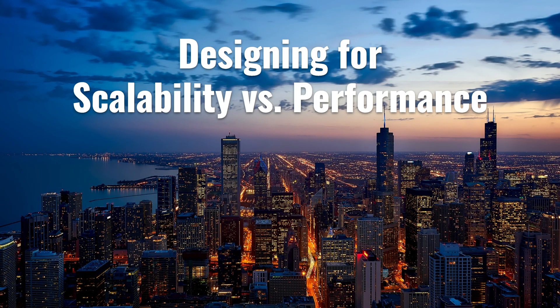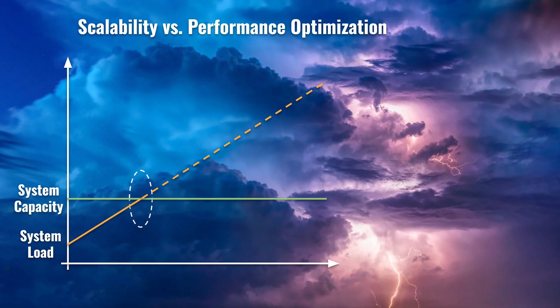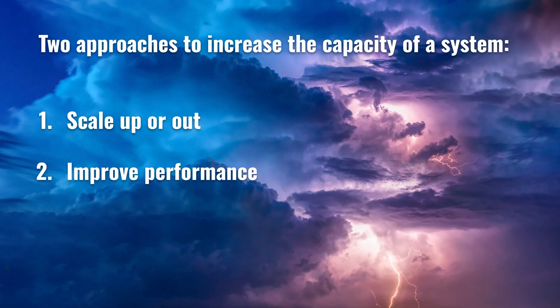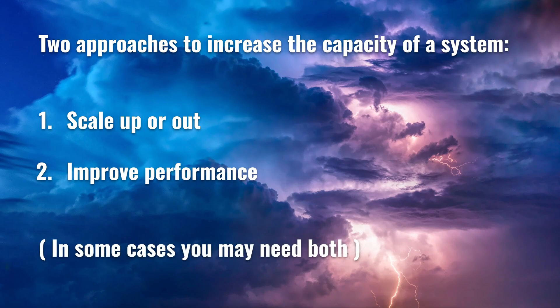In this video, I want to discuss the high-level differences between designing a system for scalability versus designing a system for performance. If the load on your system grows close to the capacity of your system, you will typically have to address that situation by increasing the capacity of the system to make sure the system can continue to handle the load that it receives. You typically have two ways to increase system capacity: you scale the system up or out, meaning you add hardware to increase the system's capacity, or you optimize the performance of the system to increase its capacity on the hardware it's already running on. In some cases, you may actually have to do both.